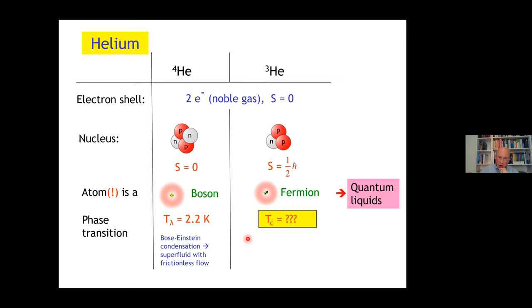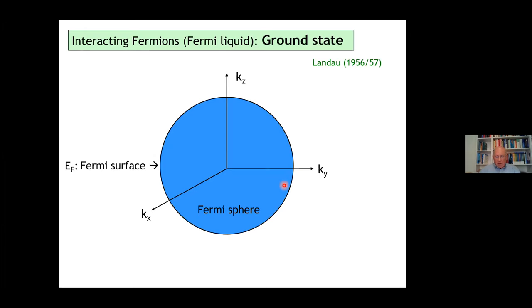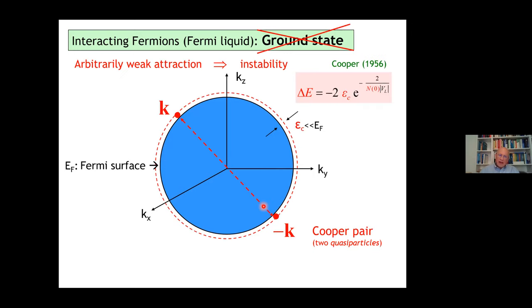There is a possible instability. For that, we have to go to interacting fermions, a Fermi liquid. Due to Landau, we know how that looks. There's a filled Fermi sphere with a Fermi surface that distinguishes inside and outside. If we add two non-interacting quasi-particles, then if there is an arbitrarily weak interaction, the ground state is unstable against Cooper pair formation, as shown by Cooper in 56.